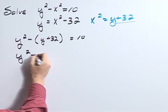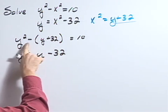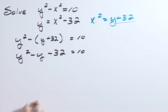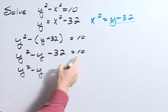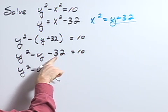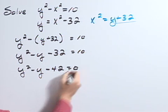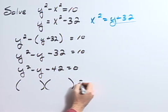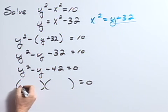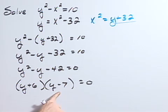So y squared minus y minus 32 equals 10. Subtracting 10 from both sides gives y squared minus y minus 42 equals 0. Now let's factor: y plus 6 and y minus 7 equals 0.